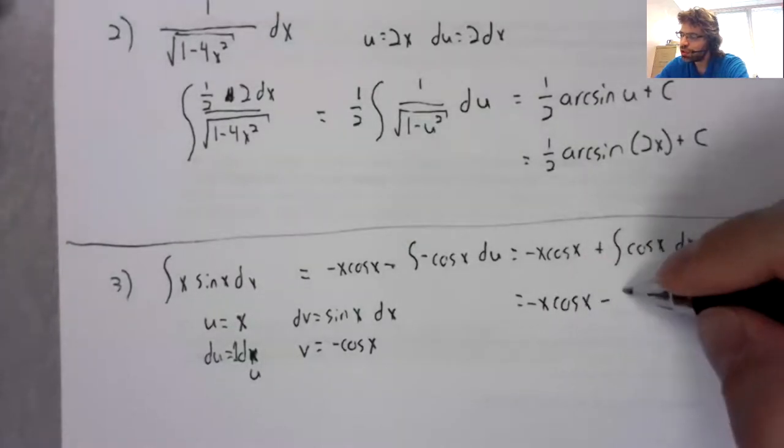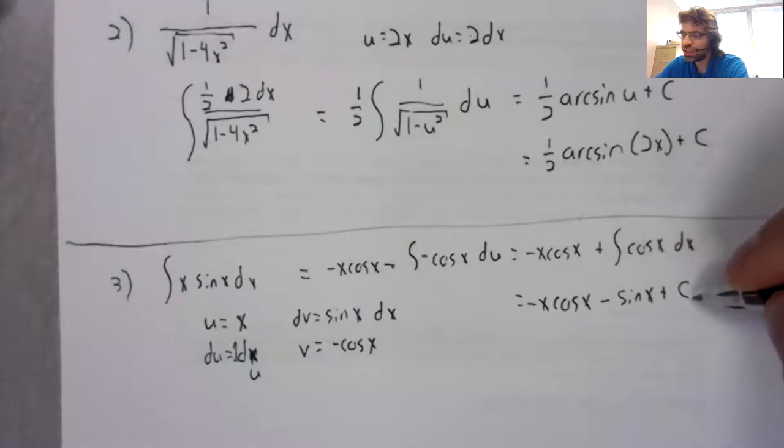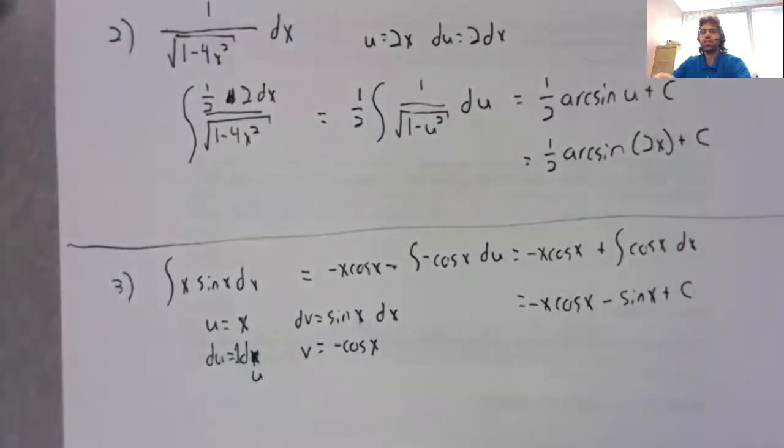The antiderivative of the cosine is the sine plus a constant of integration.